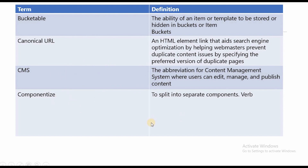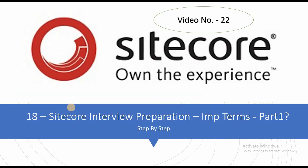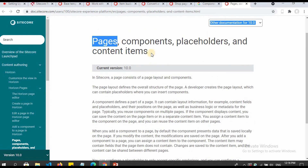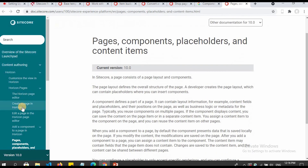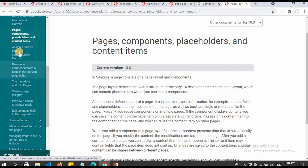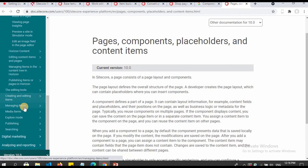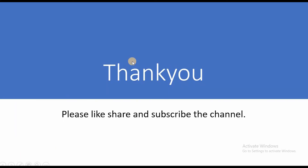The last term in this video is componentize. How do you componentize things? It means to split things into separate components. In the playlist you can check how to make components and how to use them — there are videos available. You can also go to the Sitecore site; I'll provide the link. The documentation covers pages, components, placeholders, and content items, including how to assign a content item to a component.